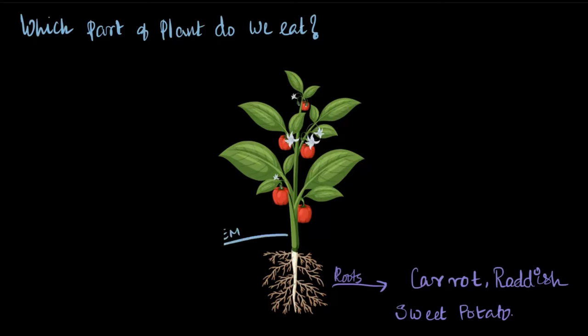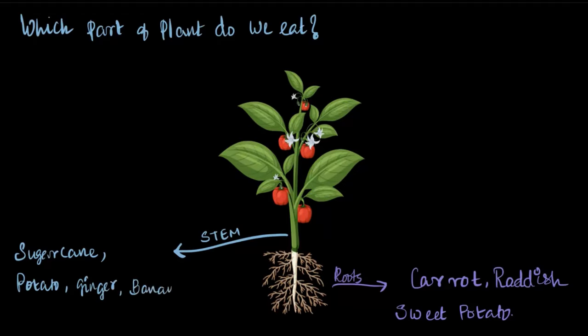If we move on to the stem of a plant, which food do we consume that is actually the stem of some plants? Sugarcane, potato, ginger, and banana plant stem are also consumed as food. You heard that right — potato and ginger are part of a stem, though it is an underground stem. It is often confused as a root of a plant, but potato and ginger are not roots; they are the stem of a plant. The only difference is that this particular stem — potato and ginger — is underground.